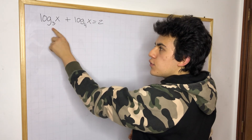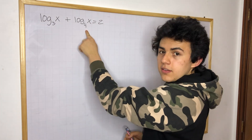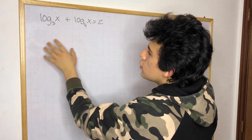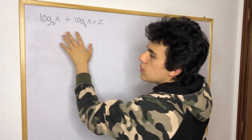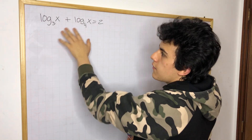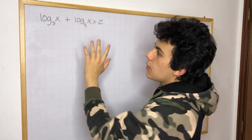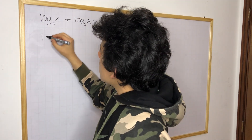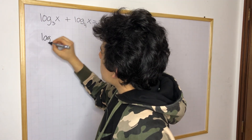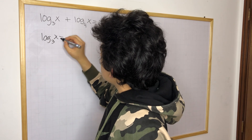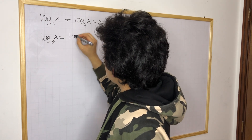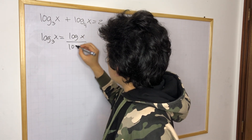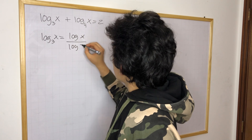Now we can see that we have two different bases. So the first thing that we want to do is we want to change the base for any of the two logarithms that we have up here. Now I'm going to choose this one right there. So we know that log base 3 of x is the same as log x over log 3.